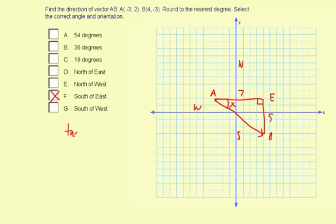So tangent of x equals the leg opposite, which is 5, divided by the leg adjacent, which is 7. So tangent of x is 5 sevenths.